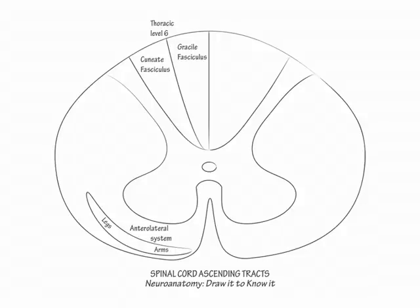It is important to label the ventral commissure between the anterior horns. This is the white matter pathway through which the anterolateral system fibers cross sides of the spinal cord.